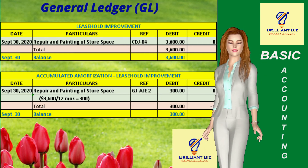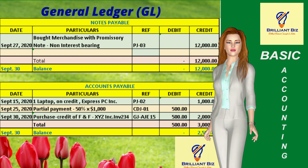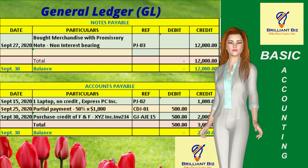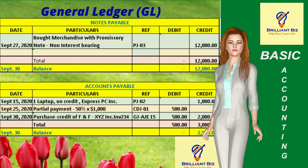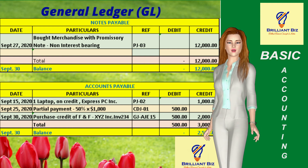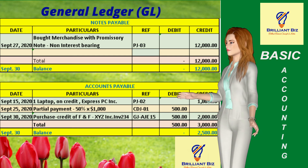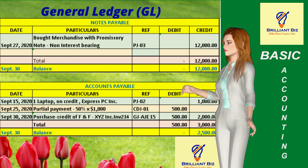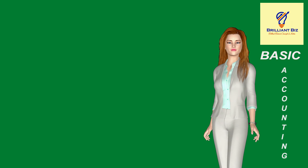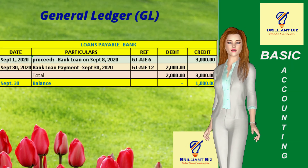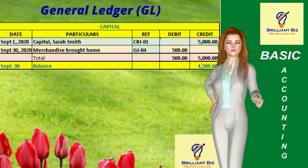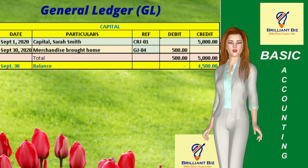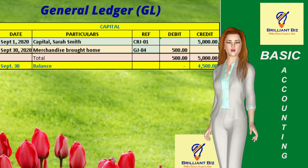This is the general ledger of the notes payable account, which represents credit purchases where a promissory note was executed by Ms. Smith in favor of the supplier. This is the general ledger of the accounts payable account, which represents credit purchases from the suppliers. This is the general ledger of the loans payable account, which represents proceeds of loans secured from the bank. This is the general ledger of the capital account, which represents the cash investment of Ms. Smith.